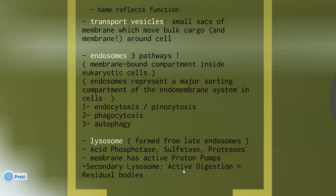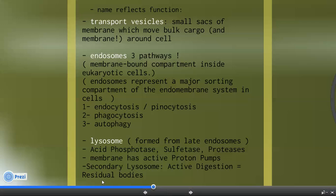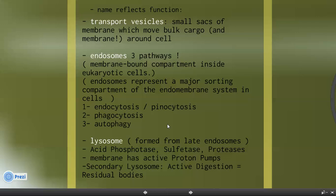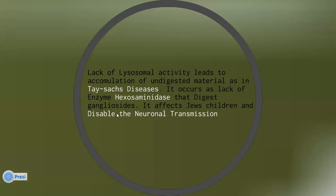The function of lysosomes is active digestion. We have something called residual bodies — these are the undigested materials left over from lysosome activity. We see residual bodies mainly in permanent cells. There is a disease related to residual bodies called Tay-Sachs disease, which is caused by lack of lysosome activity, leading to accumulation of undigested materials. It occurs due to a lack of the enzyme hexosaminidase, which digests gangliosides, and it disables neuronal transmission.